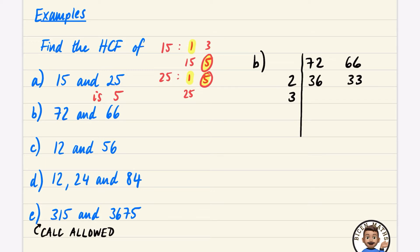Now looking at 33 and 36, I can see they're both in the three times table. 33 ÷ 3 = 11 and 36 ÷ 3 = 12. Now 11 and 12 do not appear in the same times table other than the one times table, so we're ready to find the highest common factor.